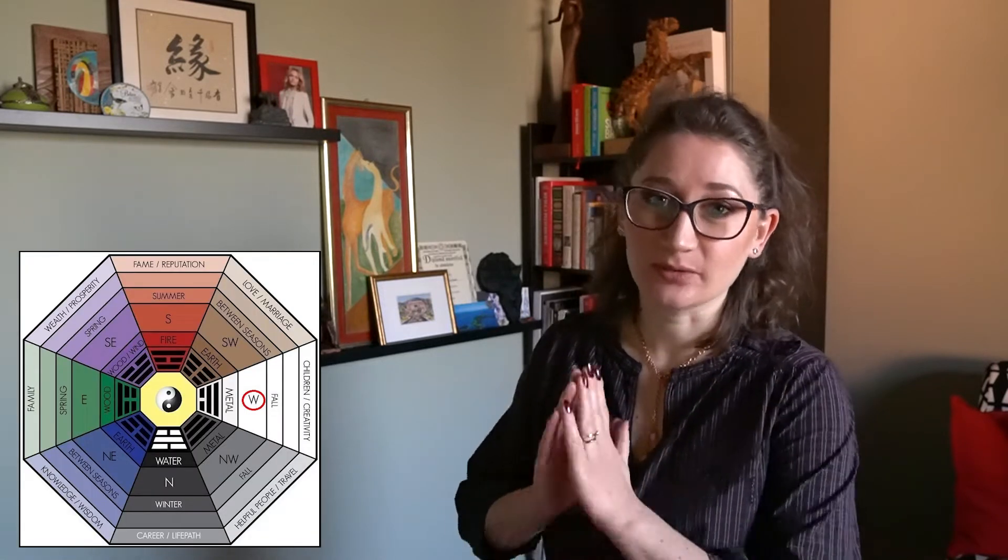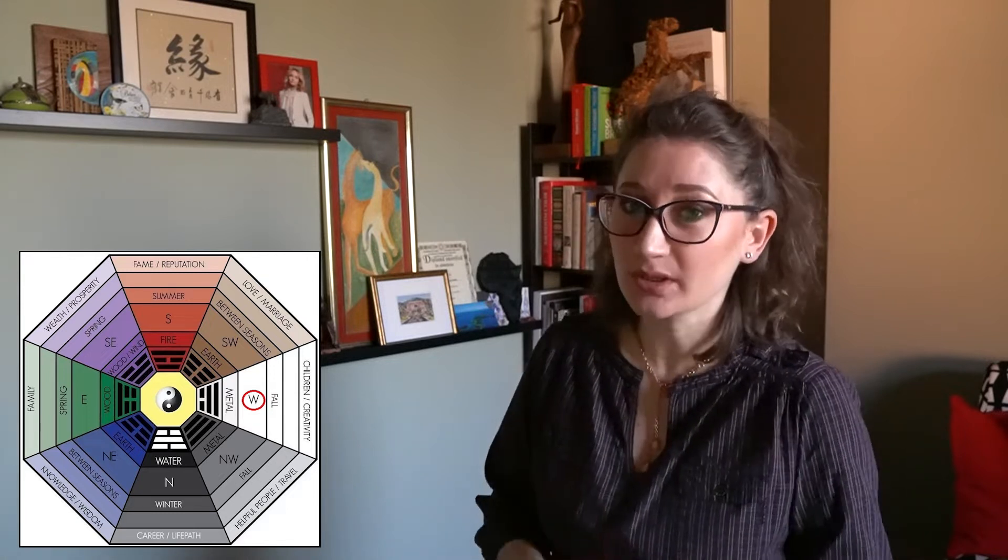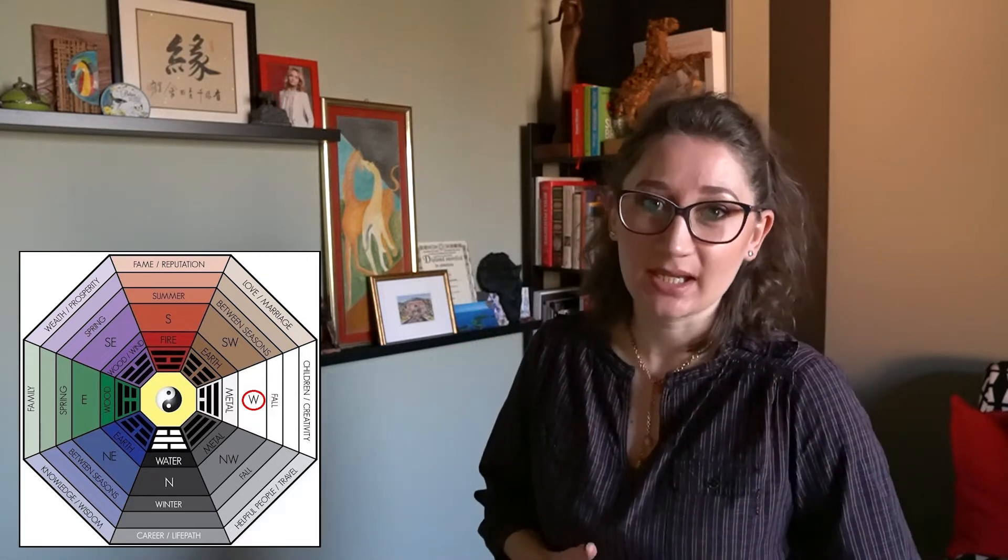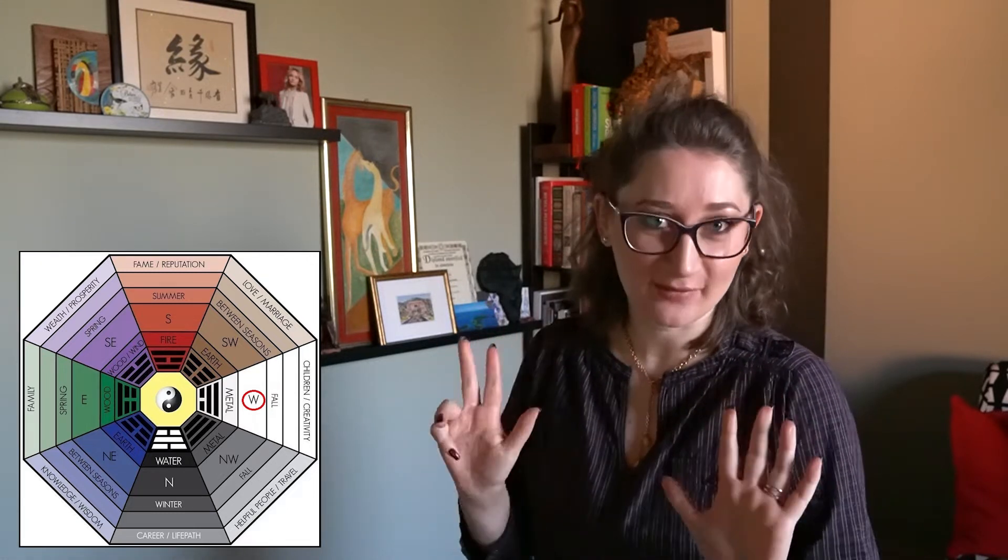In the compass school, the sector of children corresponds to the west direction, and according to the Lo Shu quadrant, it is under number seven. Although some relations may not be seen immediately, they do exist, and Feng Shui is very attentive to these details.